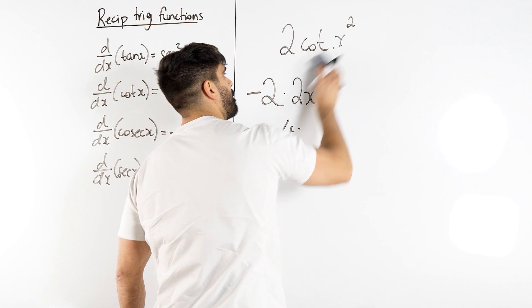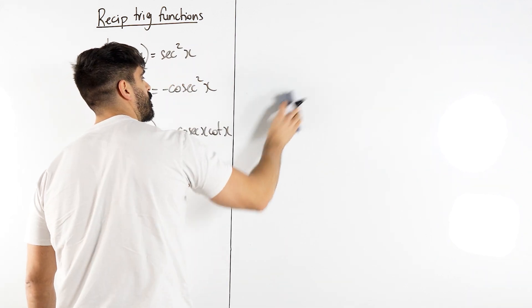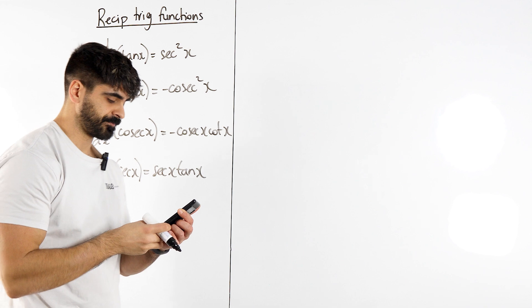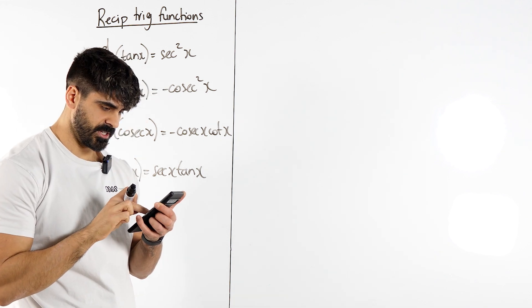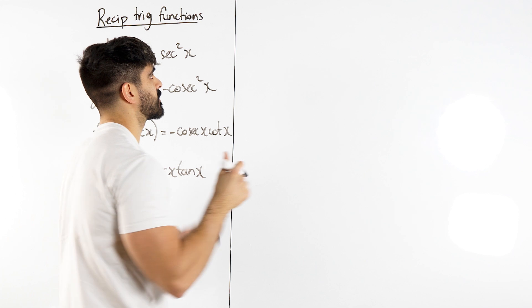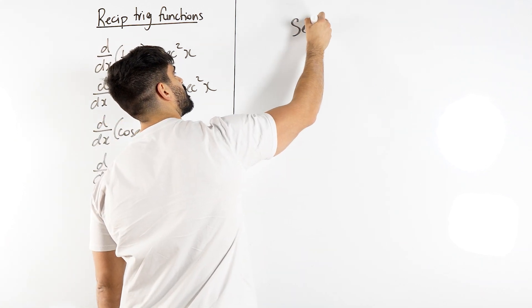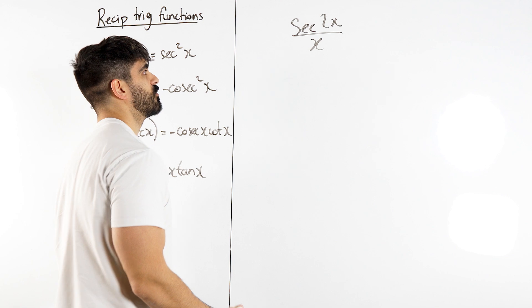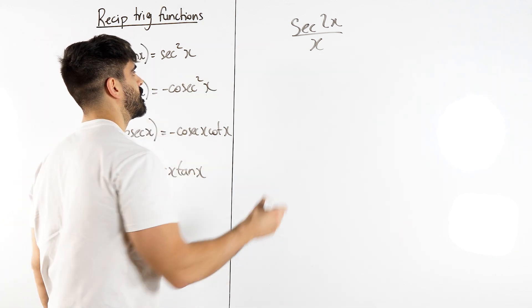Next one. We can blast through so many of these if you just know your basic rules and understand the chain rule. We've got differentiate sec 2x over x. Sec 2x all over x. This is a classic quotient rule, we have a fraction.